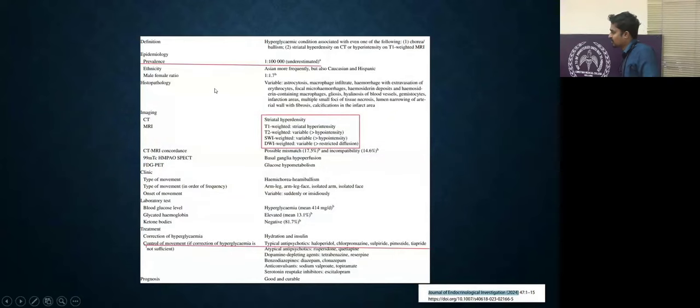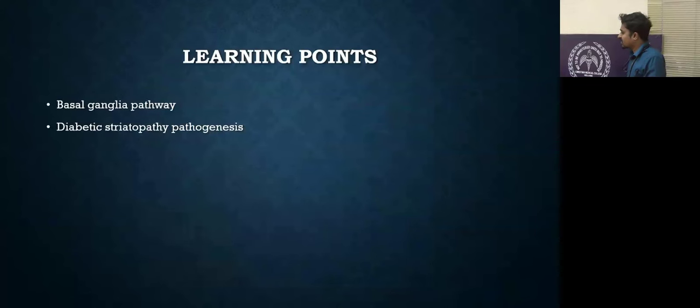This is the overall summary of this patient. Mainly the treatment we consider was hydration and insulin. After sugar control, it will take around two to three days to control the movements. If not controlled, we can start with antipsychotics or dopaminergic depleters. Learning points: this is about basal ganglia pathway and diabetic striatopathy pathogenesis.